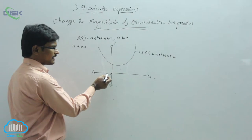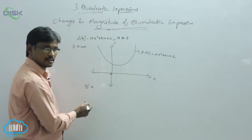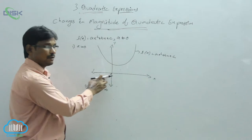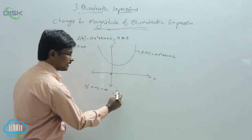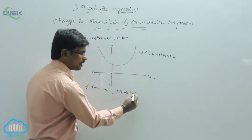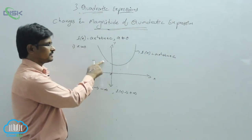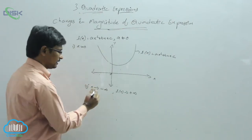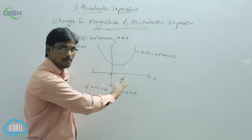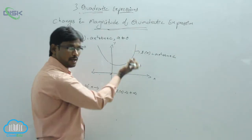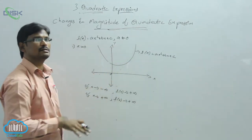Now, if the x value reaches negative infinity, then the f(x) value reaches positive infinity. Similarly, if x reaches positive infinity — towards the positive side — then f(x) also reaches positive infinity. So all the f(x) values are positive in those directions.